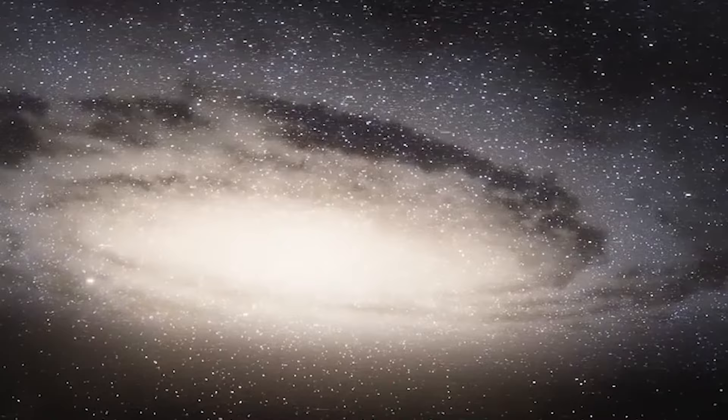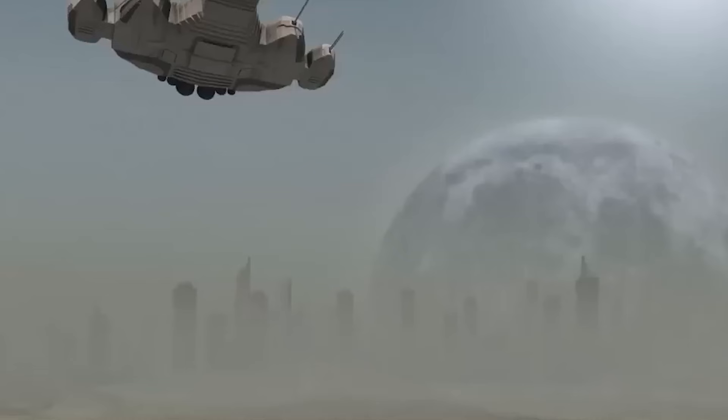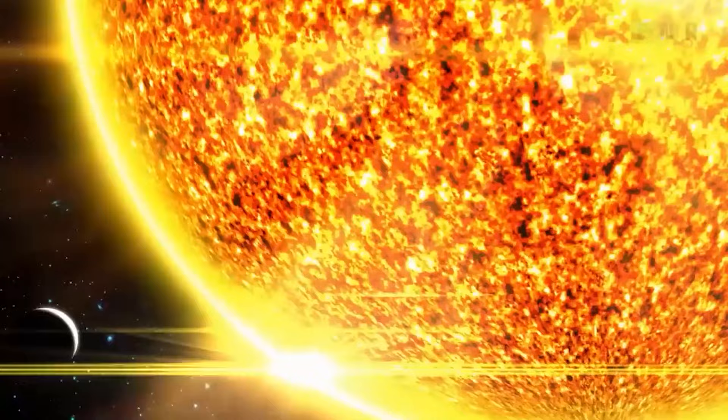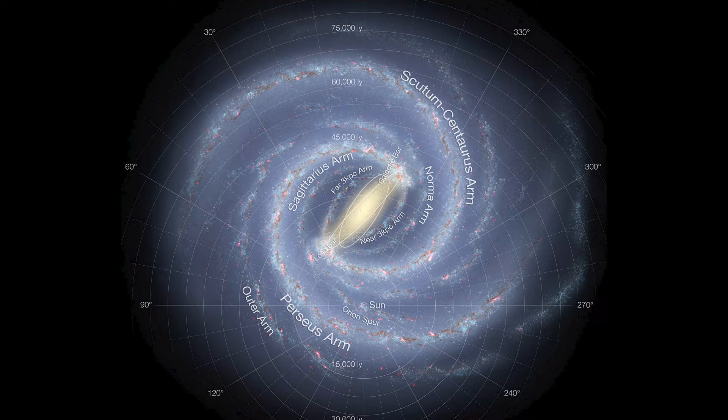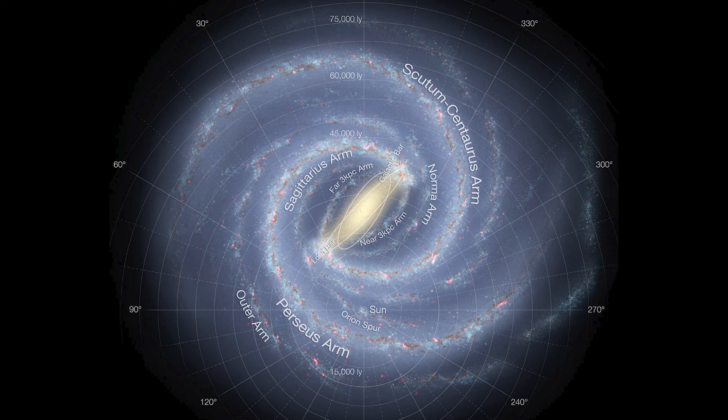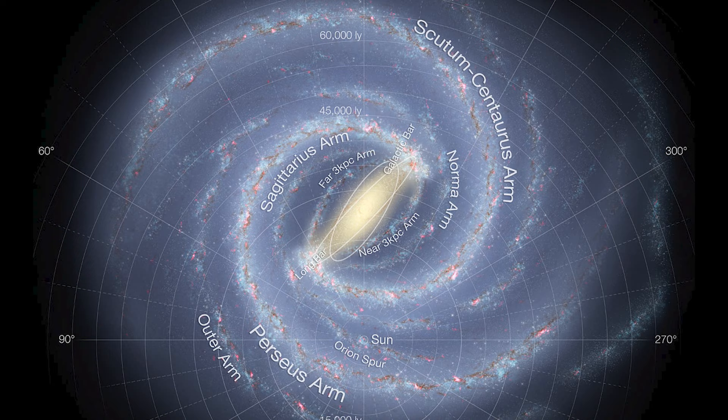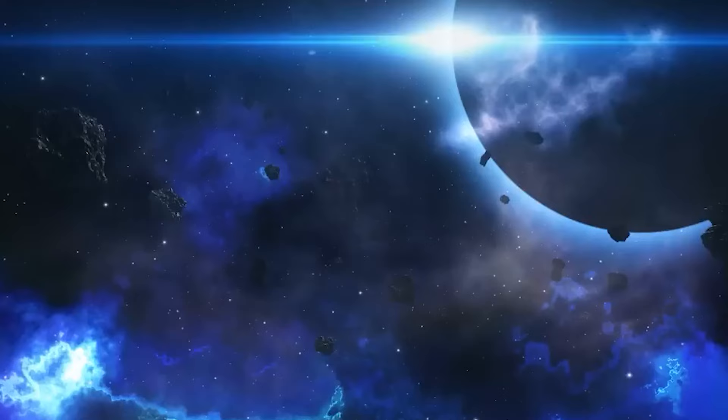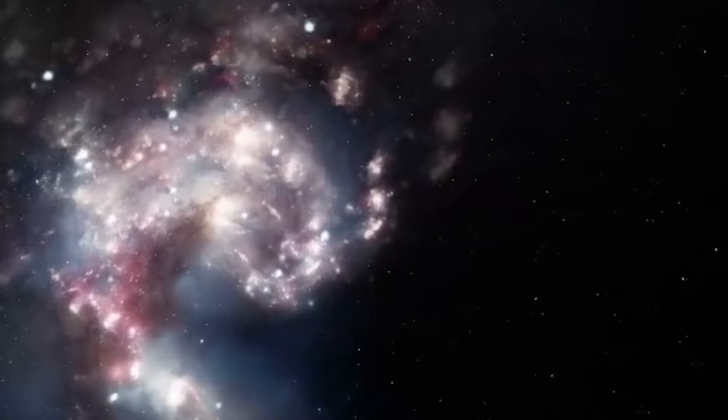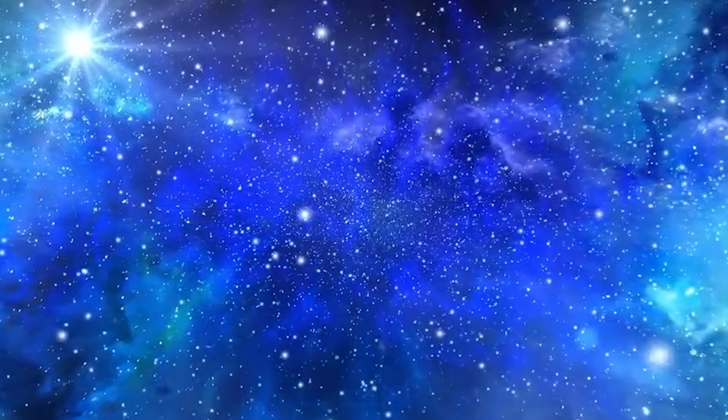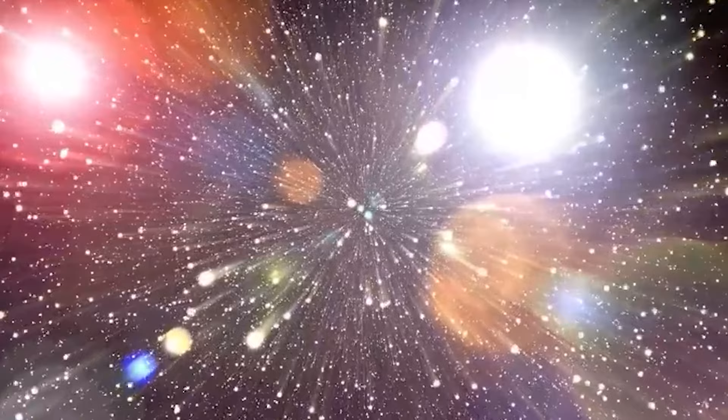Now, fast forward to our present-day cosmic odyssey, armed with the astounding tools of modern astronomy. Our humble solar system calls a cozy neighborhood named the Orion Arm, or Orion Spur, its home. Nestled somewhere between the Sagittarius and Perseus arms, we're approximately 26,000 light-years away from the Milky Way's heart. Our enchanting cosmic neighborhood, where stars dance in an elegant spiral of stardust, creating a celestial spectacle that has captivated humanity for eons.